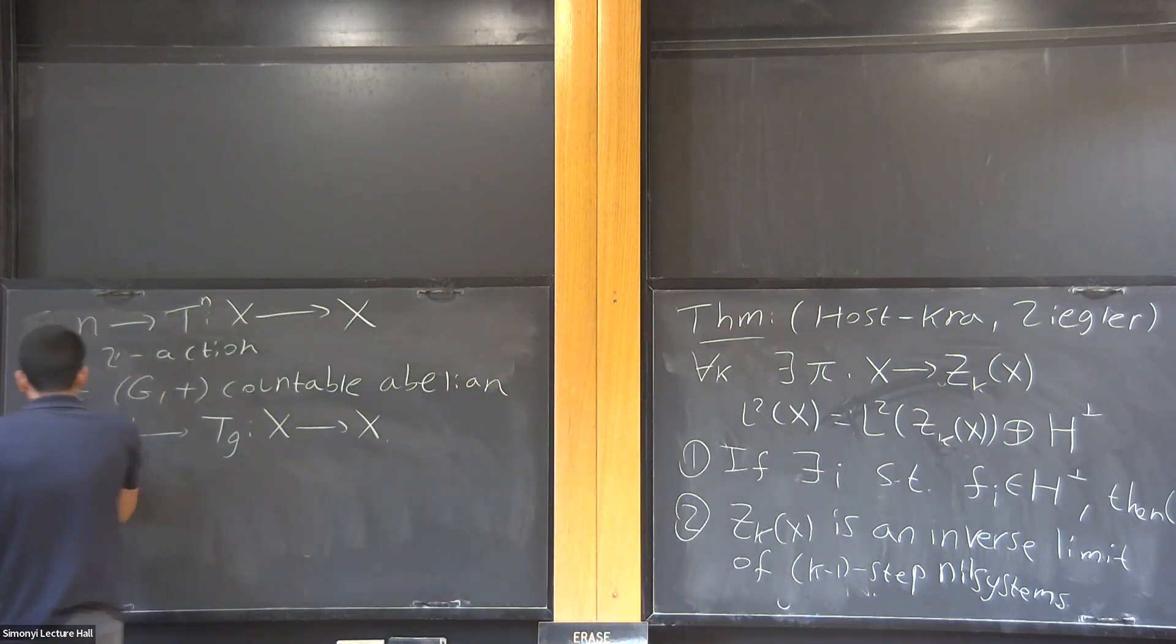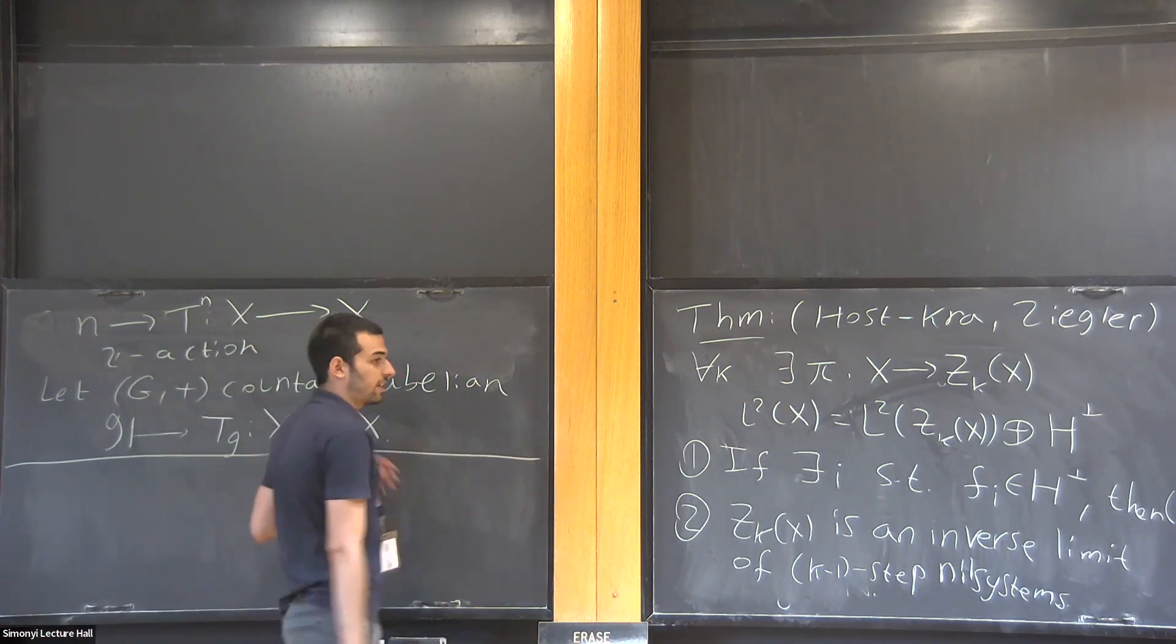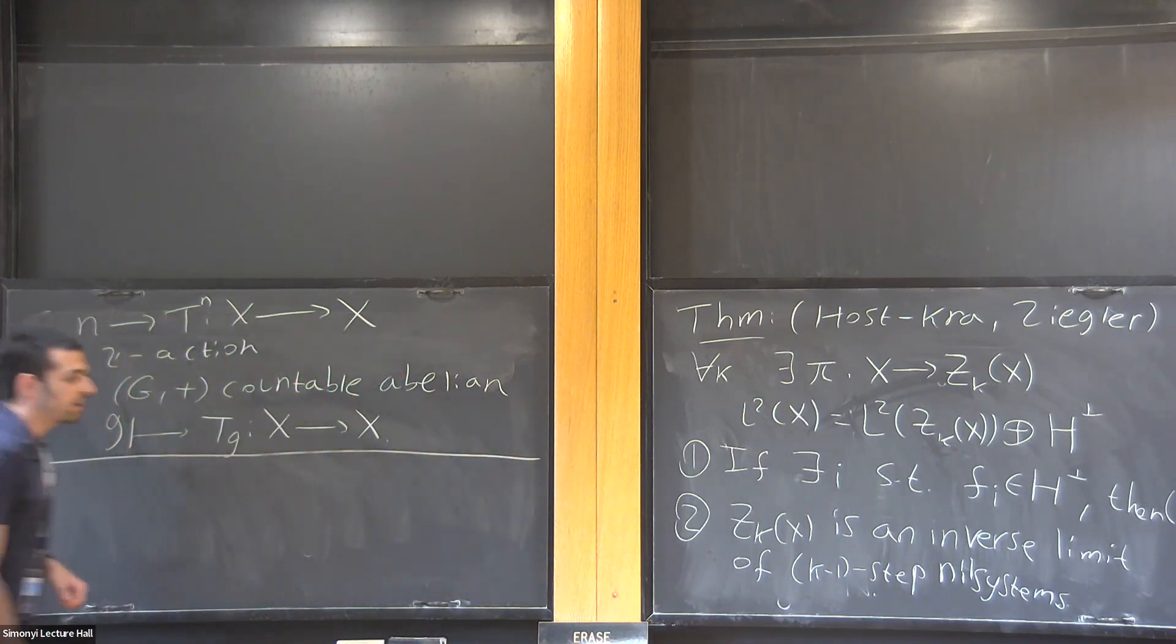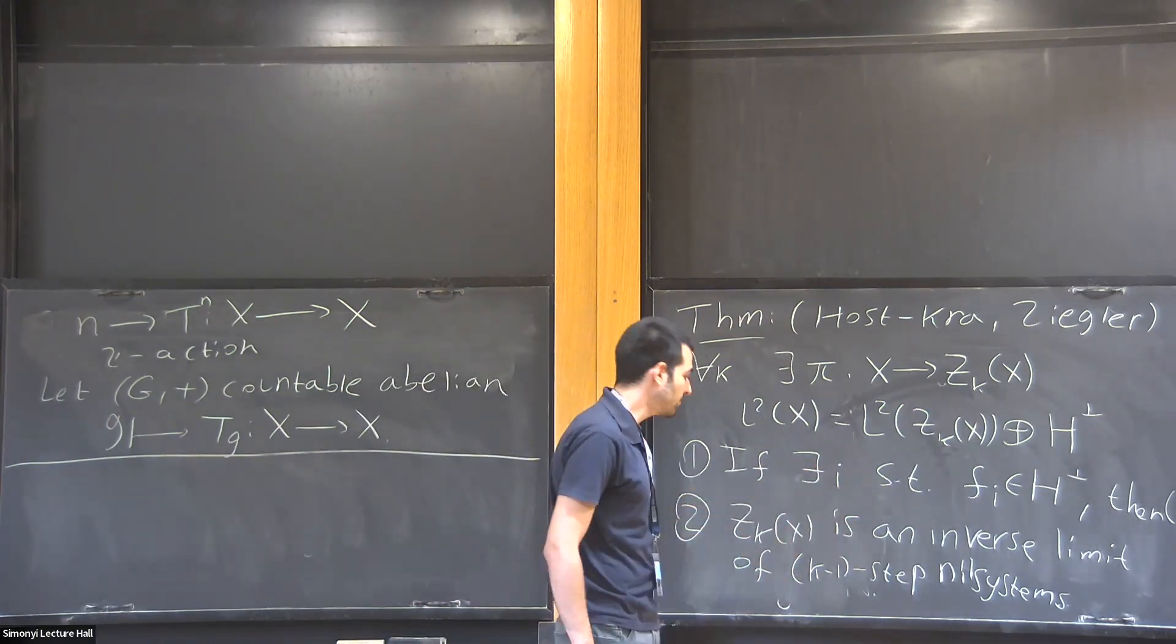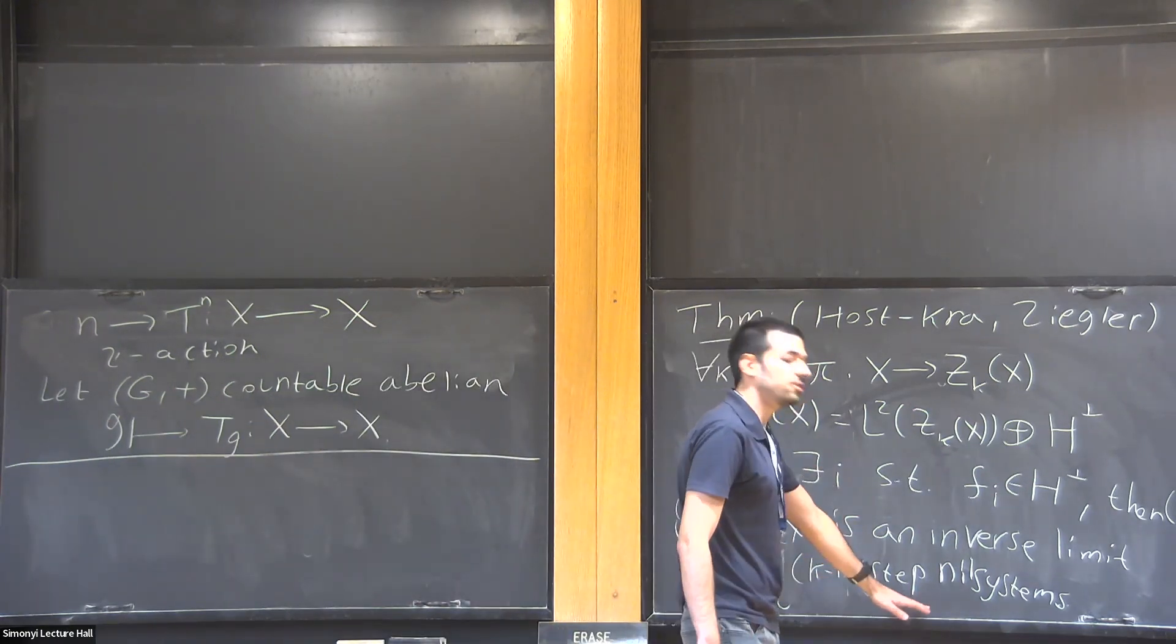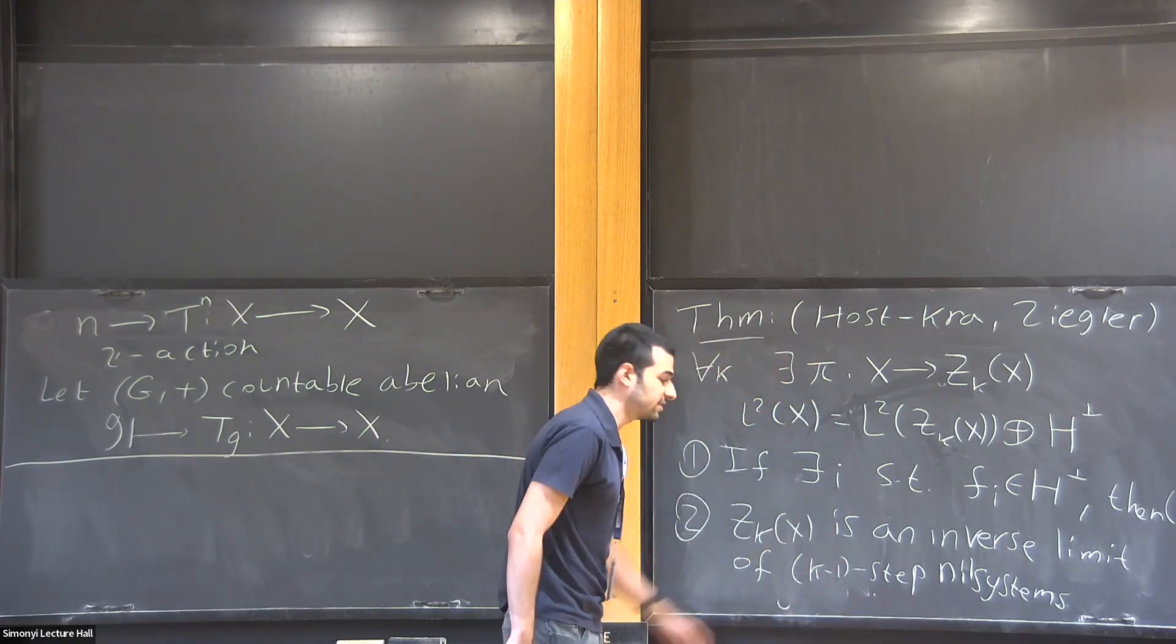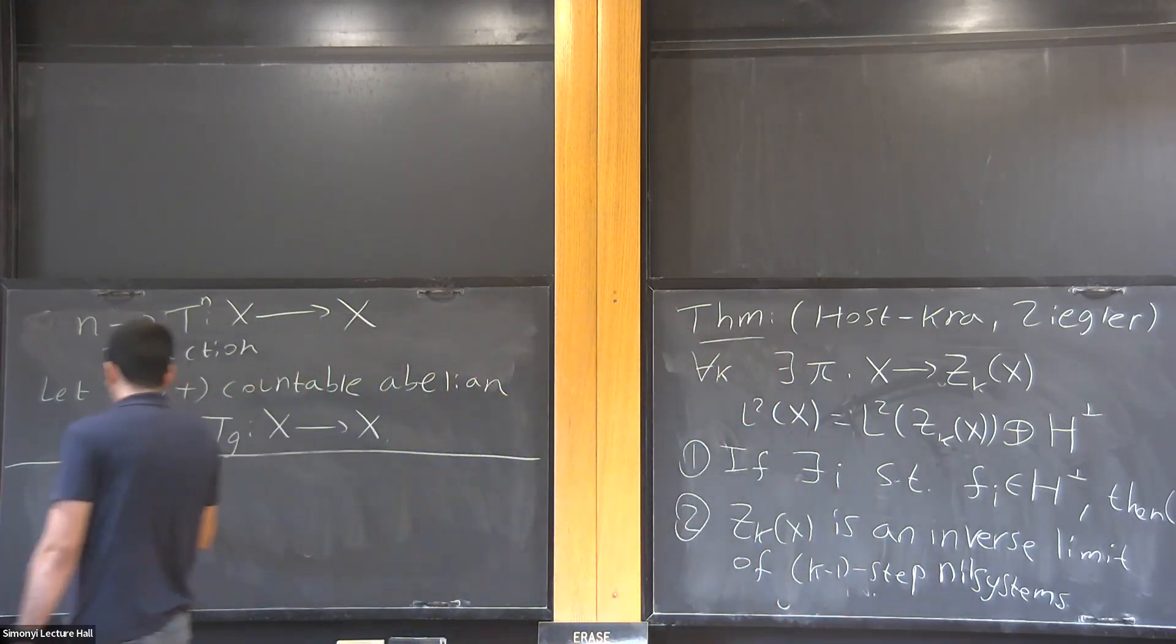So I gave an example showing that, in general, when this group is not finitely generated, the special factor, at least for k greater than or equal to 3, will not be an inverse limit of nilsystems, but it will be something else, at least for small k.